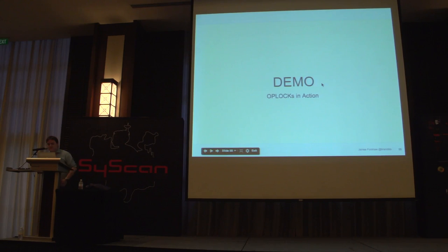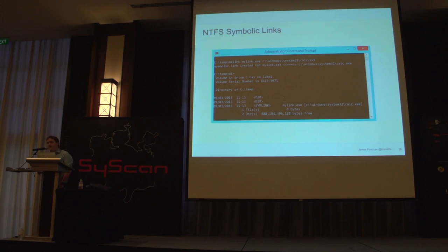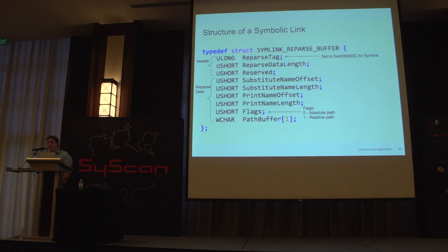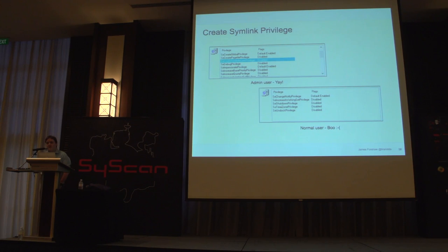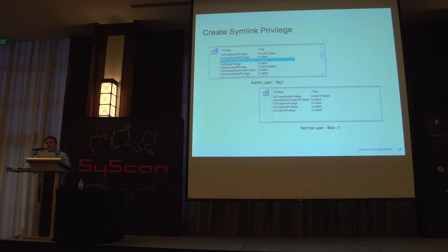The final symbolic link functionality added in Vista was file-level symbolic links. It looks much like a normal reparse point buffer, except you can do it on a file as well. But from an exploitation perspective there's a problem: you need a special privilege, and by default only admins get this privilege. So as a normal user on a default Windows install, you can't use this functionality at all.